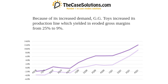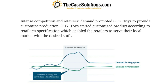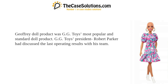Because of increased demand, GG Toys increased its production line, which eroded gross margins from 25% to 9%. Intense competition and retailers' demands prompted GG Toys to provide customized production according to retailers' specifications, which enabled retailers to serve their local markets with desired products.